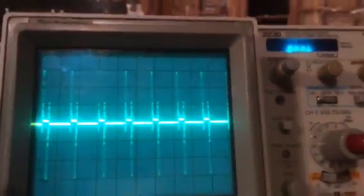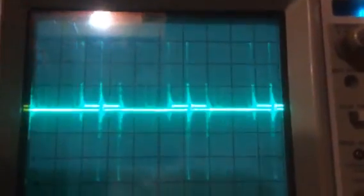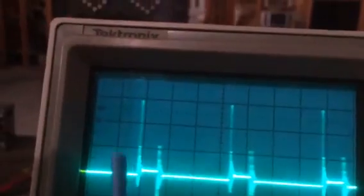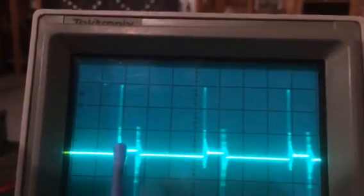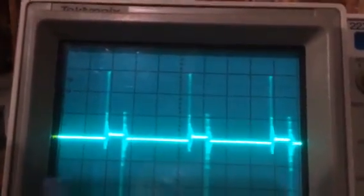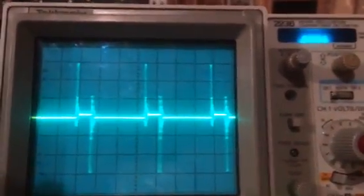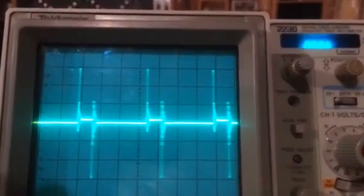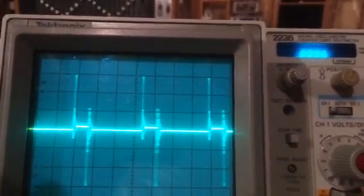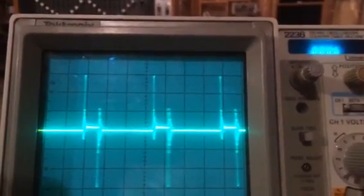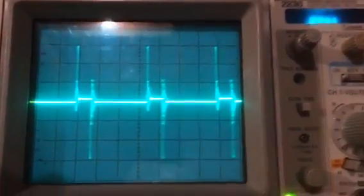You basically see the same waveform that we saw in the last video. There's my switching frequency here, and then I've got my high frequency components on both the leading edge and the trailing edge. Again I'm on 1 volt per division. You can see 6 volts peak to peak of noise. Quite substantial.